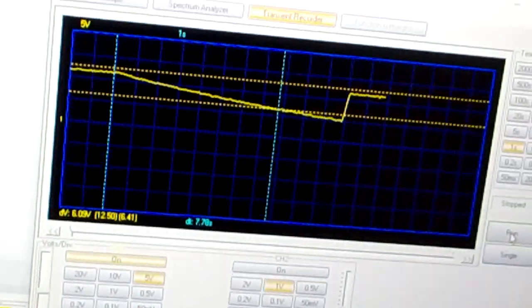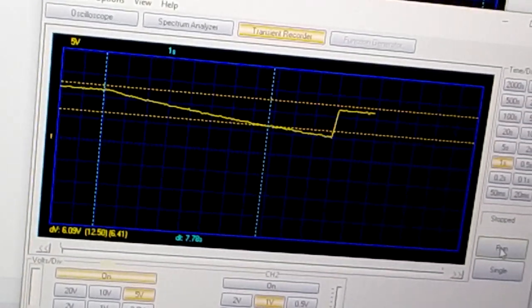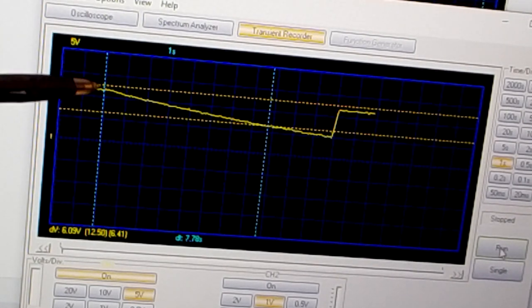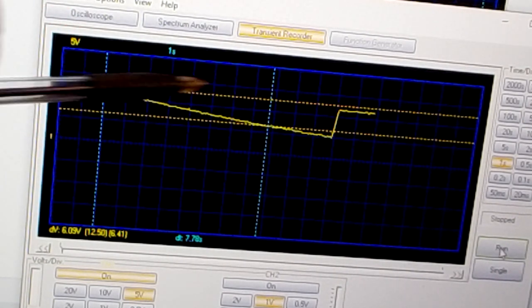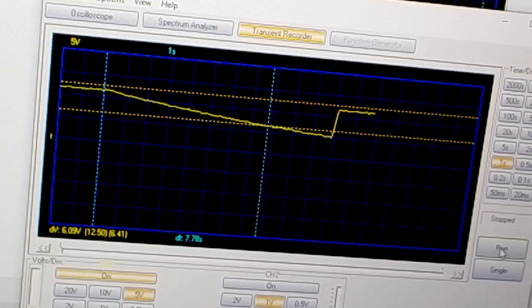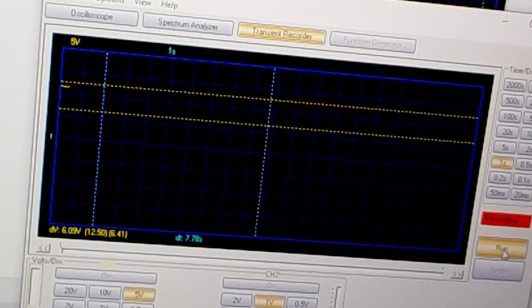Back to the transient recorder. You can see these are the lines that we had with the free oscillations. I am going to restart. And now I switch off. And you can clearly see the very difference when we are having the free oscillations or not.